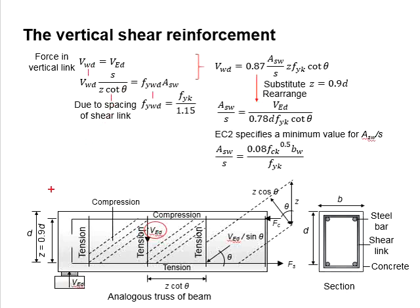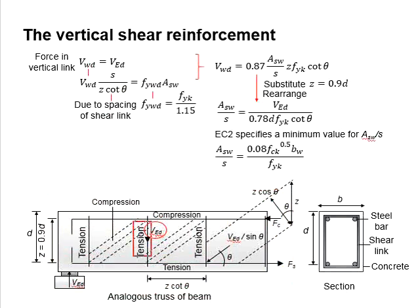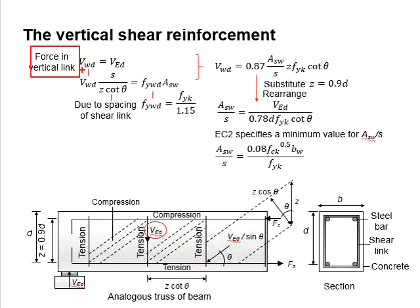From the analogous truss, the spacing between the two tensile forces will be equal to Z·cot(θ). As the shear link is spaced at a certain distance, the effective force in the vertical link is a function of the spacing divided by the distance between the vertical tensile stresses.